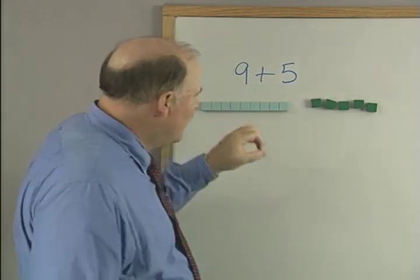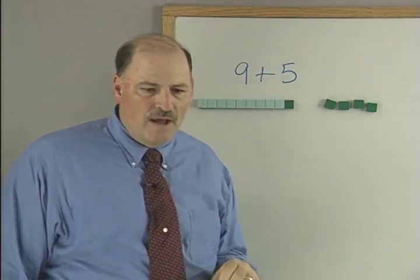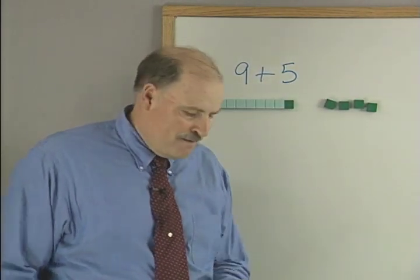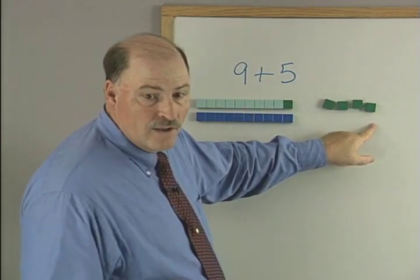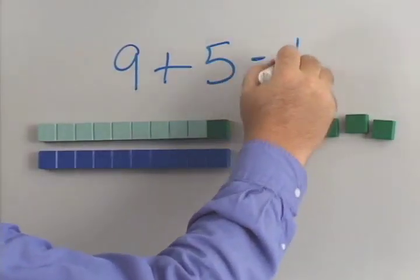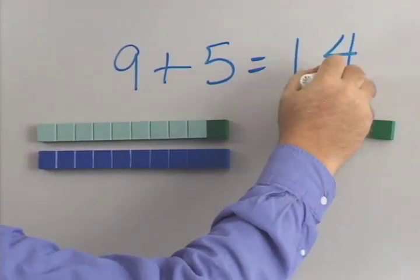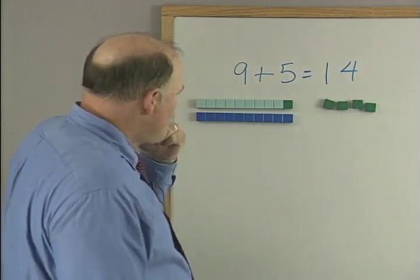Mr. Nine sneaks over, and he grabs one because he wants to be what? A 10. A 10. So is he 10 now? Yes. How much do we have left over here? Four. Four. And so nine plus five is one 10 and four units, right? Or 14. You like that?